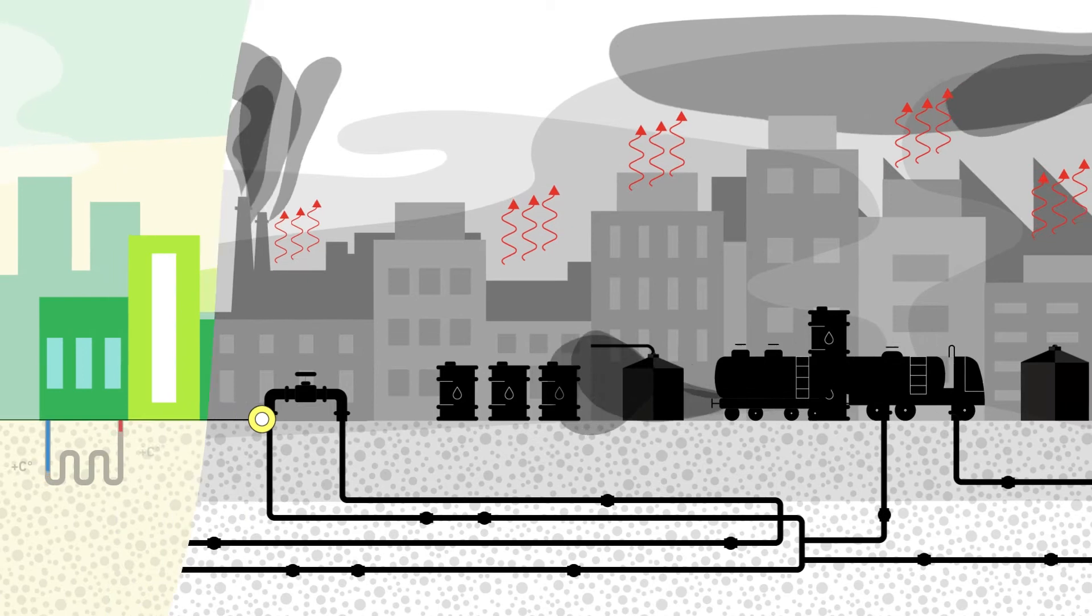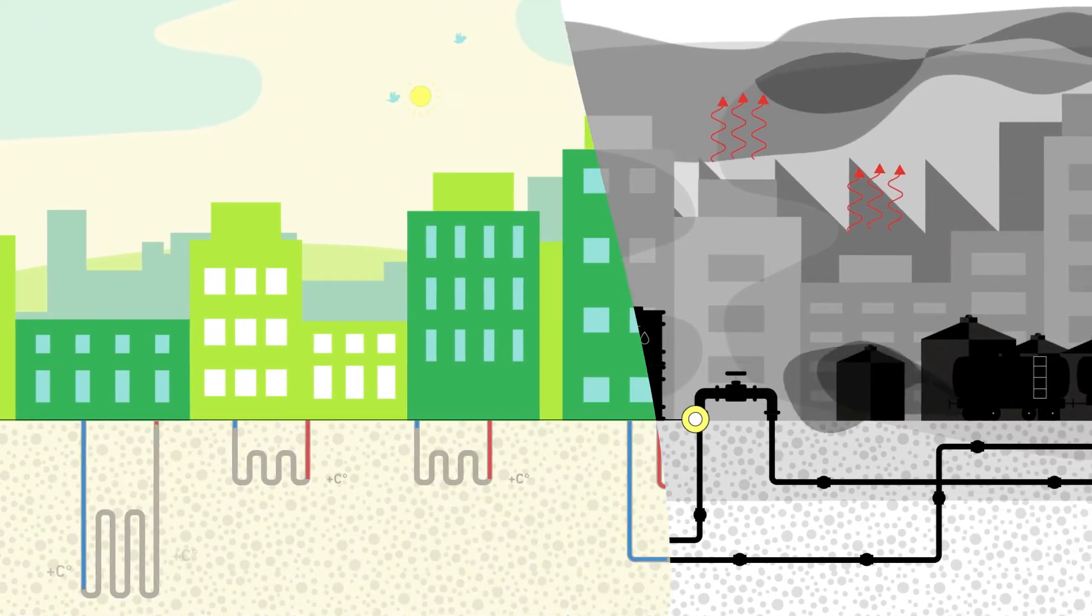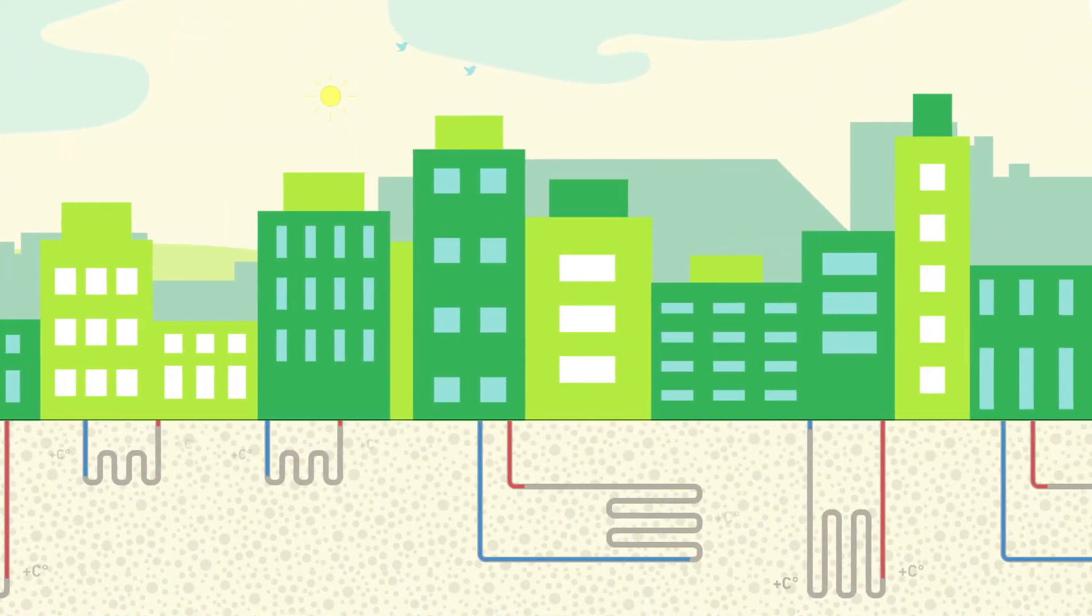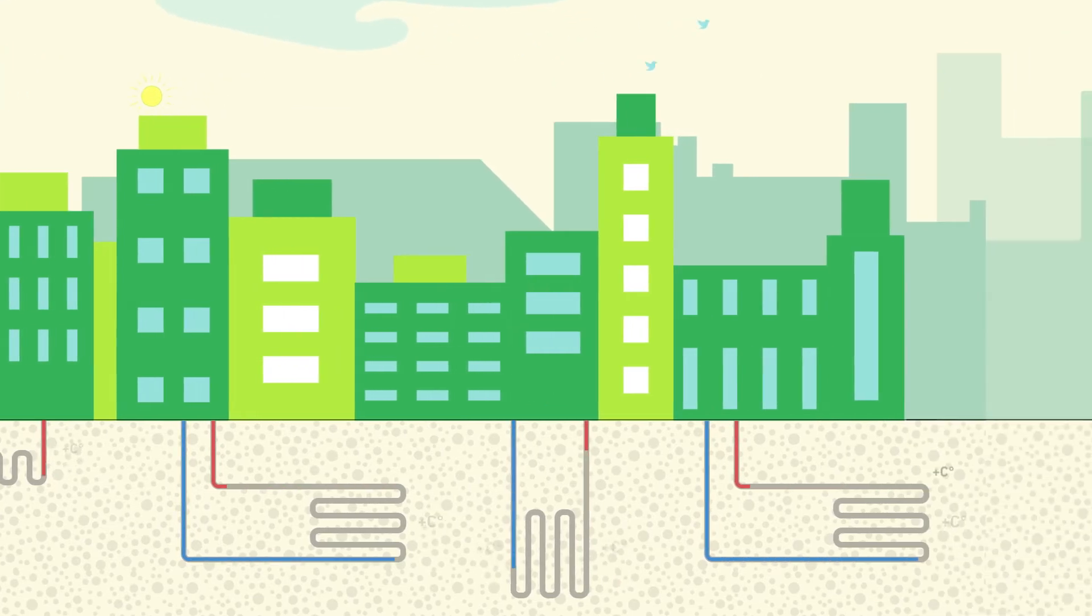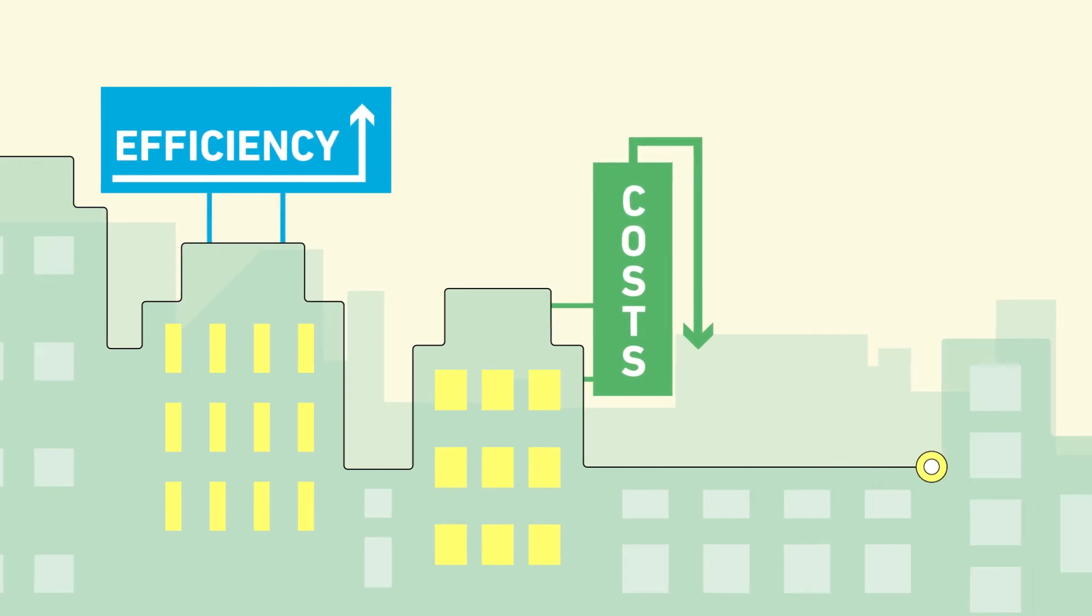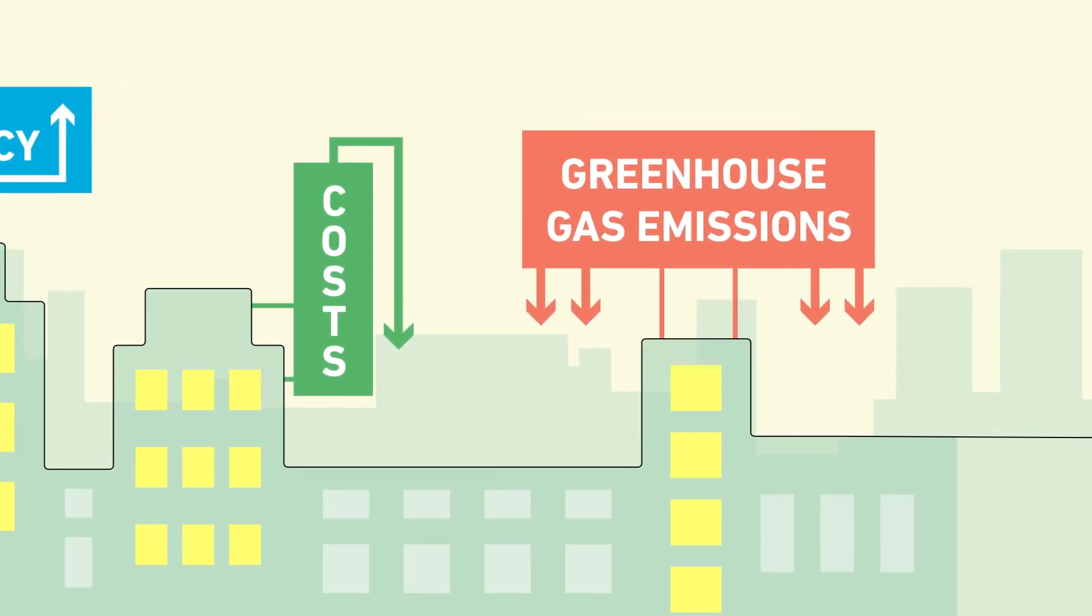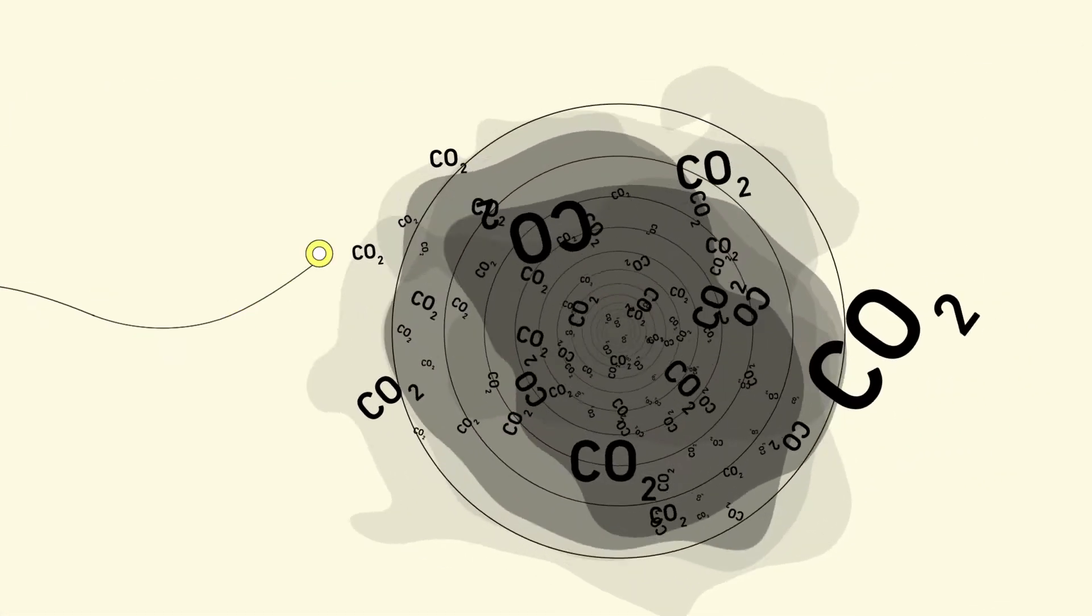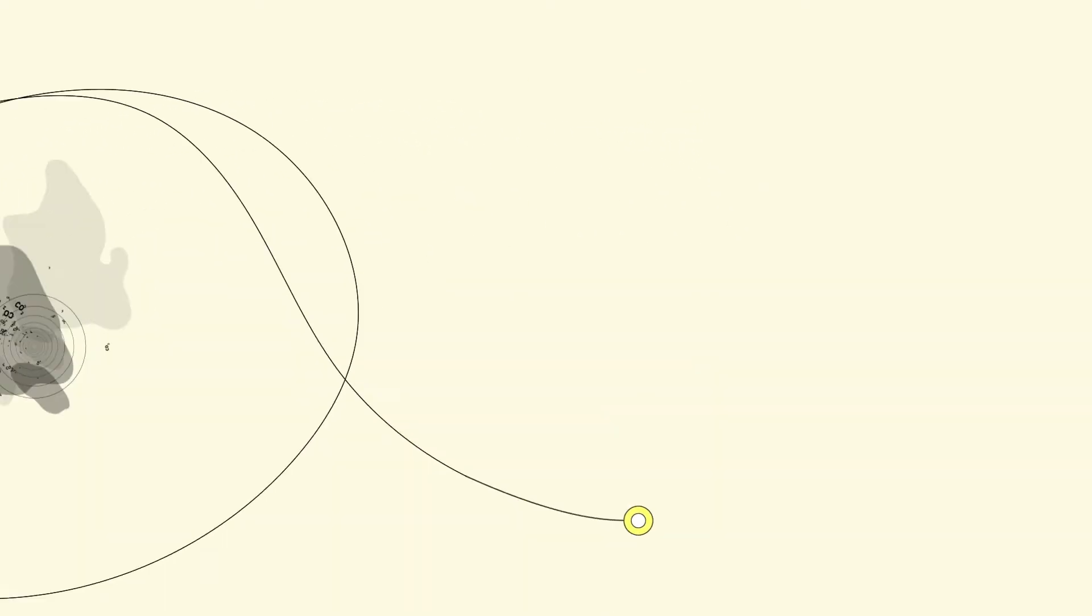Electricity provides great potential in buildings too. Choosing electricity-based heating and cooling systems over traditional fossil fuel-based technologies leads to greater efficiency, lower running costs, and reduced greenhouse gas emissions. We can break out of the carbon-intensive cycle if the right incentives are in place.